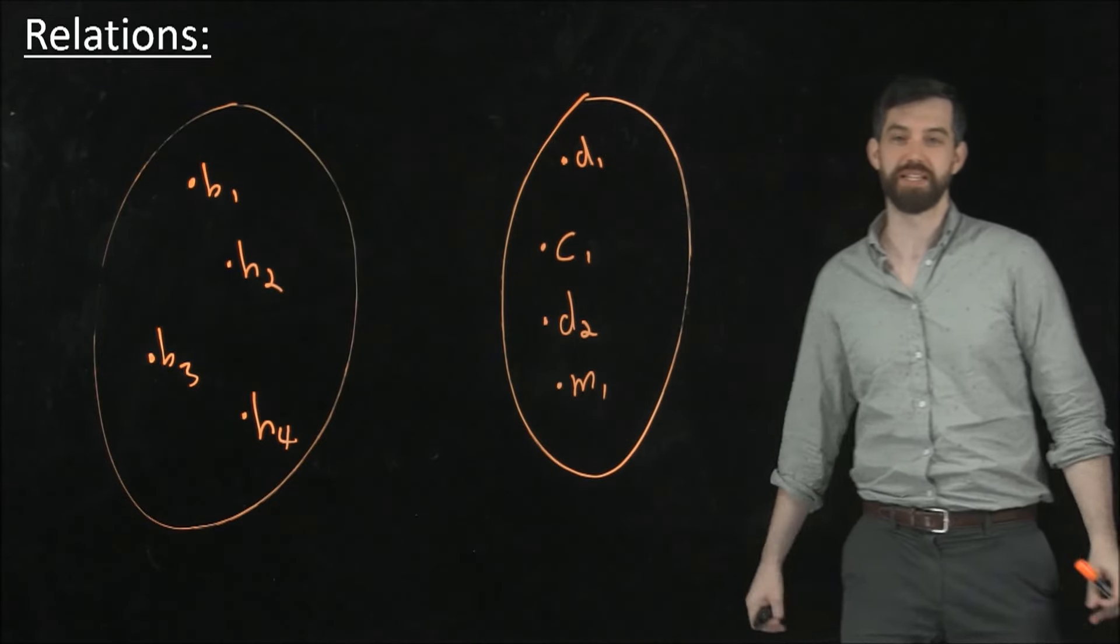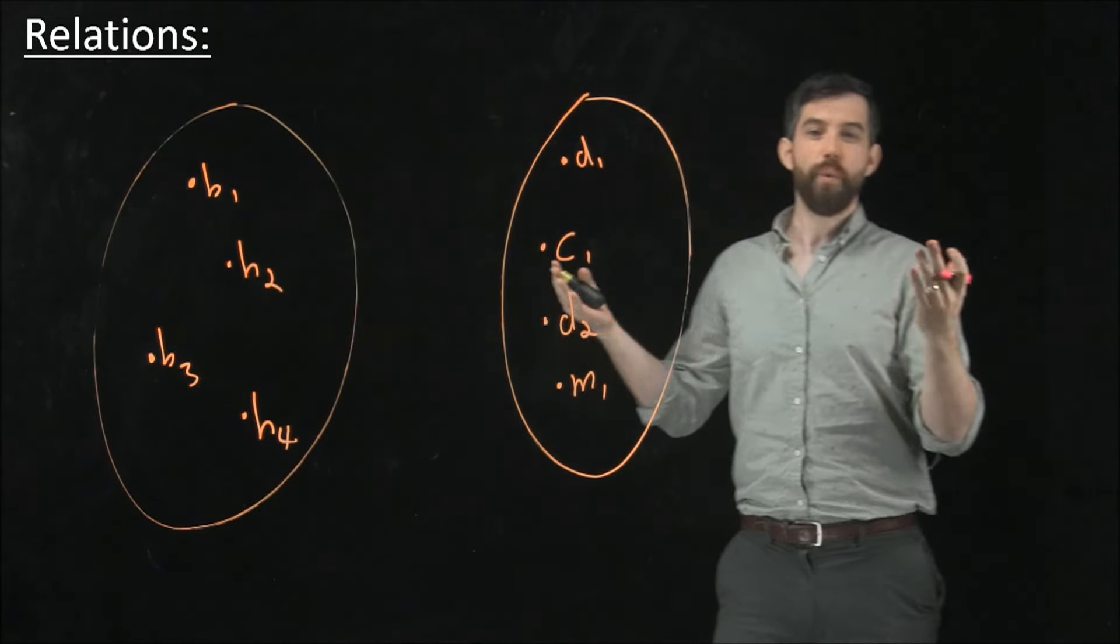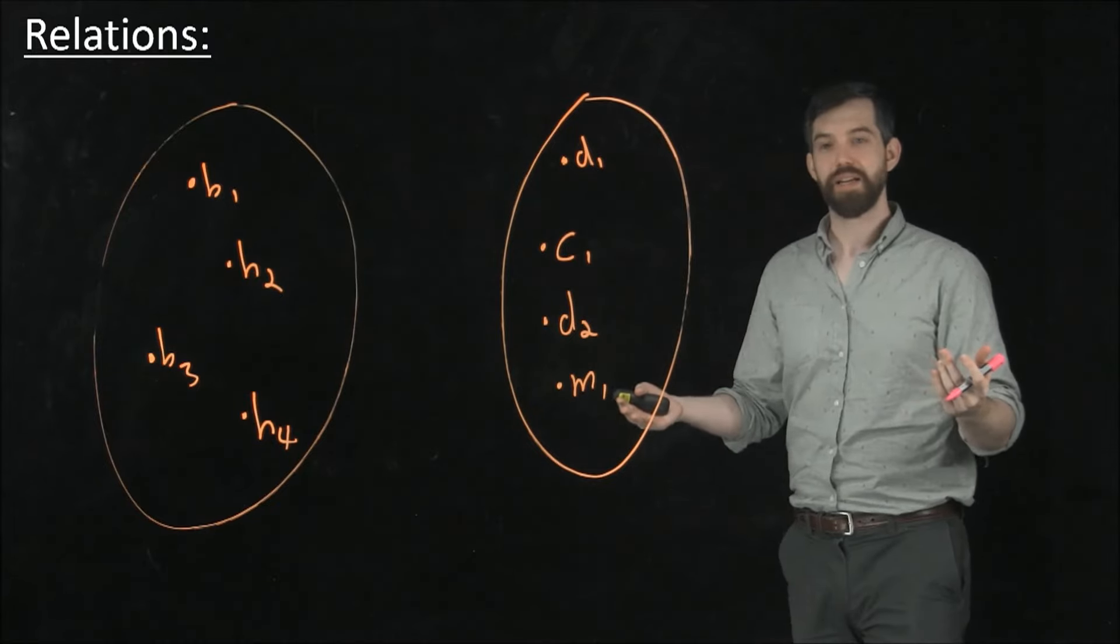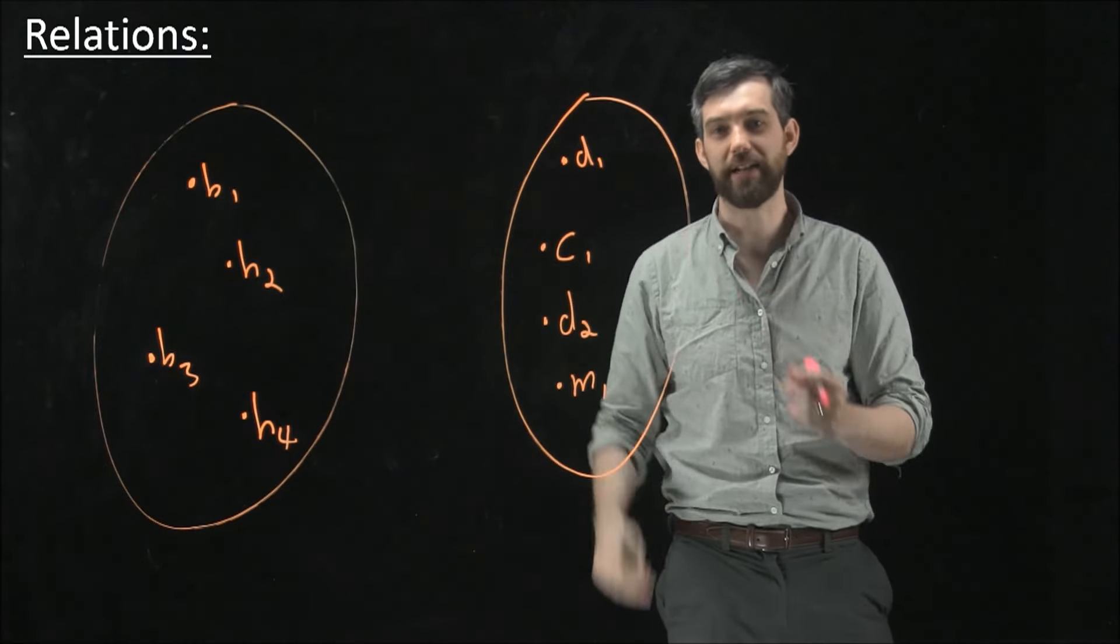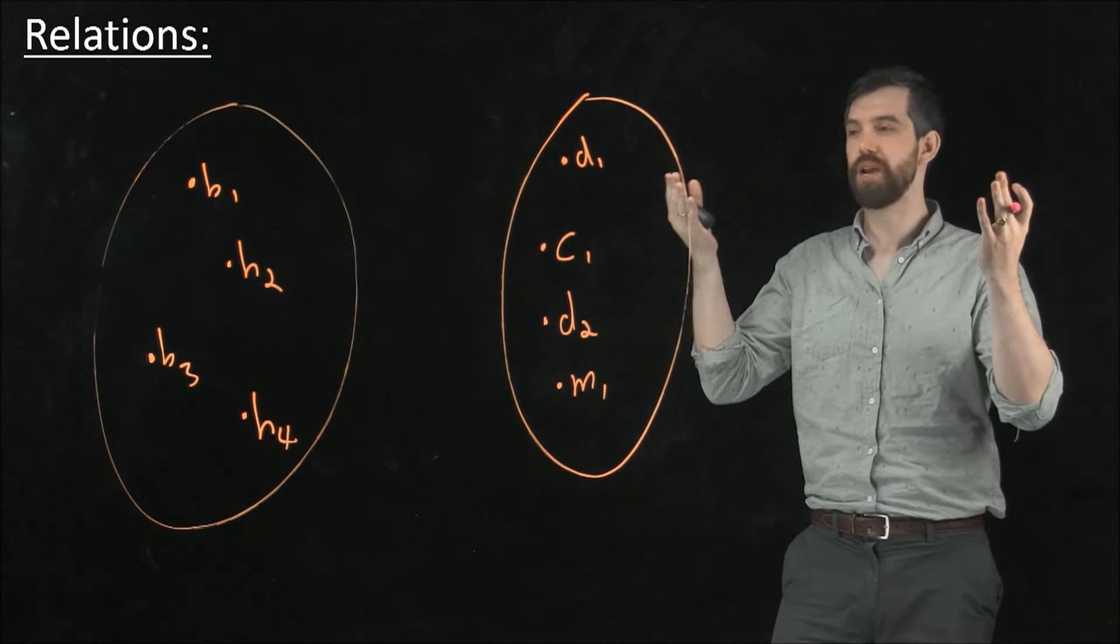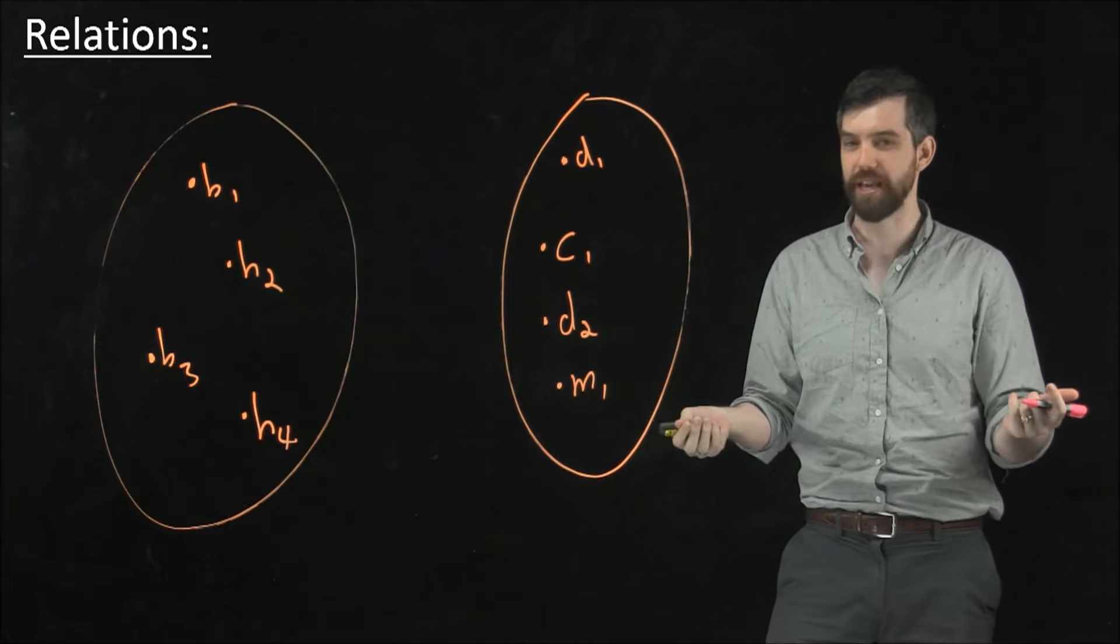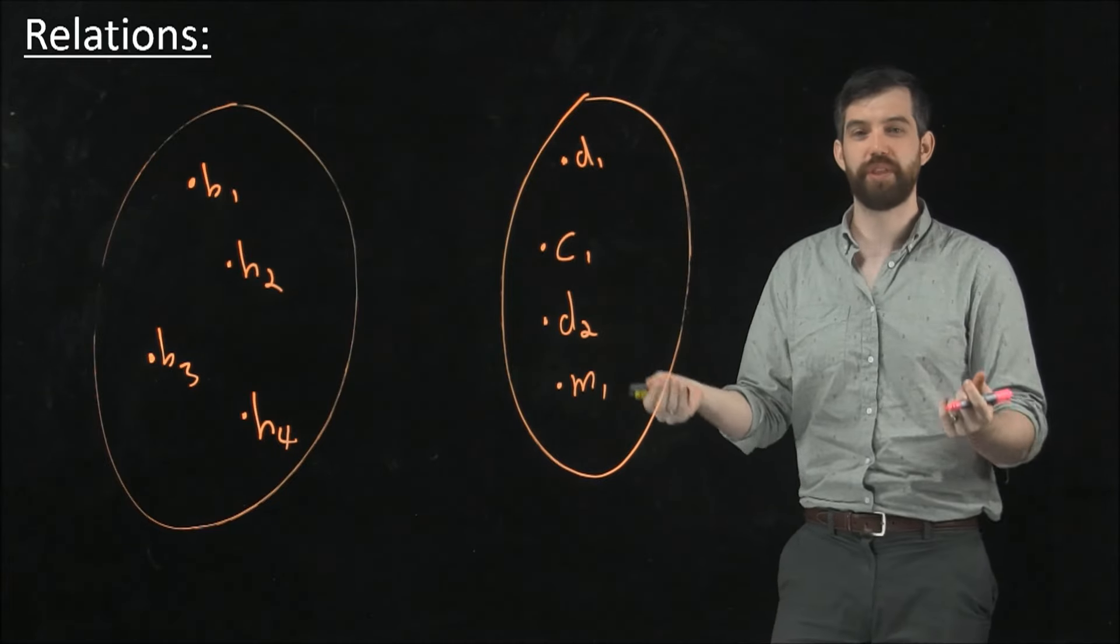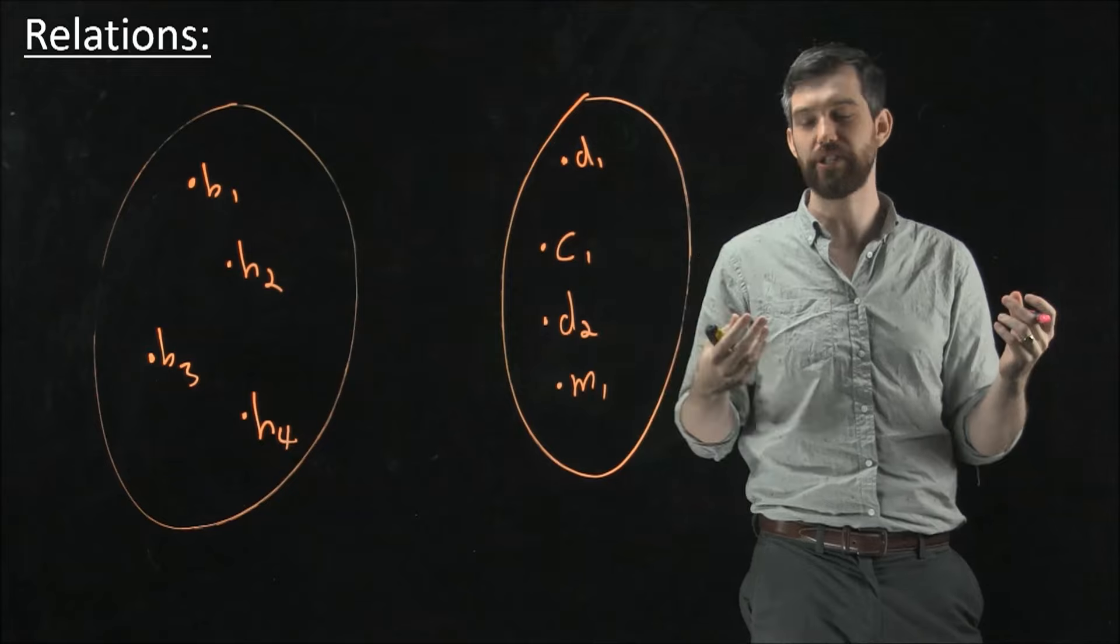Now what I want you to think about is that these two different sets, the set of humans and the set of pets, there could be some relationship. So maybe what we're going to do is we're going to make our relation be ownership. That the human owns the pet, that is a relationship.